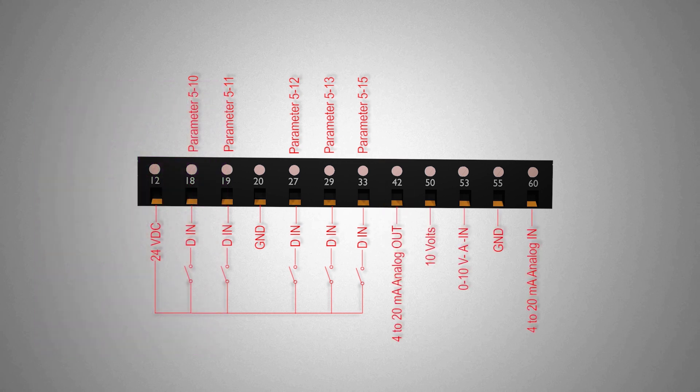Terminal 42 is here to generate an analog output which will be 4 to 20 milliamps signal. This signal can be programmed to show output voltage, current, frequency or the RPM of the motor.